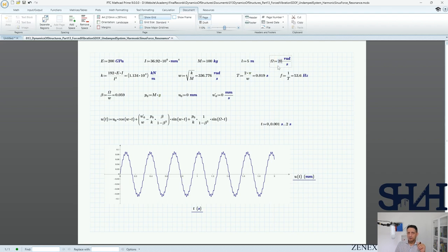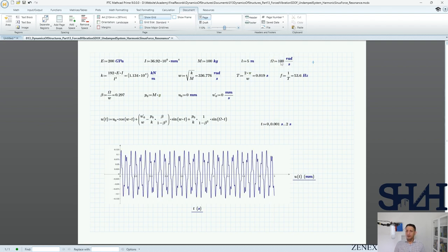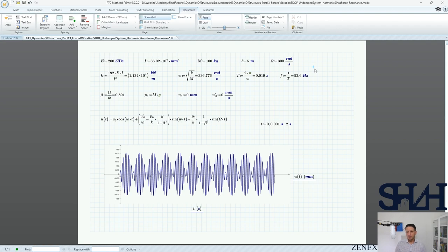We can just manipulate frequency of the system. Let's go to 50, let's change it to 100, let's be closer to this value, for example let's go to 300. When beta is close to one, perhaps more than 0.9,